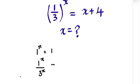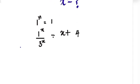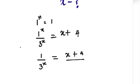We can write it like that, and it equals x plus 4. From there, we're going to have 1 to the power of x — which gives us 1 — divided by 3 to the power of x, equals x plus 4. So we can write this x plus 4 as over 1.